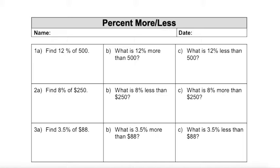Percent more or less. We've talked a little bit about how to find the percent of a number. So for part A of these examples, we're going to first start by finding 12% of 500.